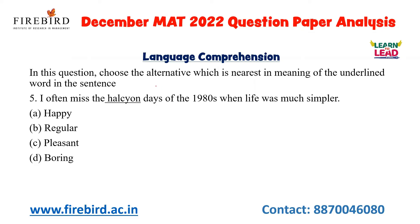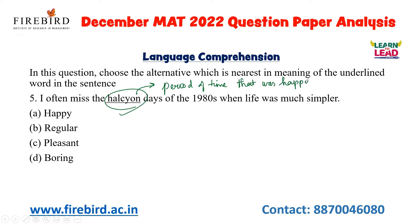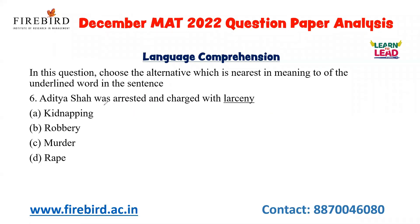The second type of question asks for the synonym of the underlined word. 'I often miss the halcyon days of the 1980s when life was much simpler' — halcyon refers to a period of time that was happy, so the answer is happy. Next: 'Aditya was arrested and charged with larceny' — larceny means theft of personal property, so the answer is robbery.